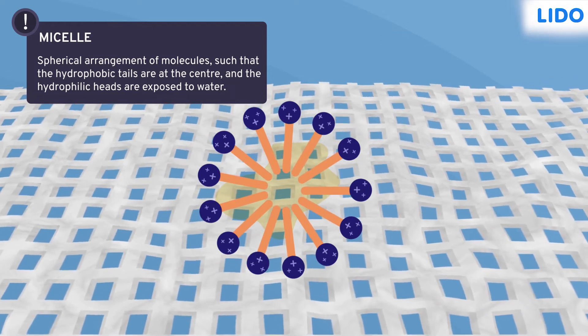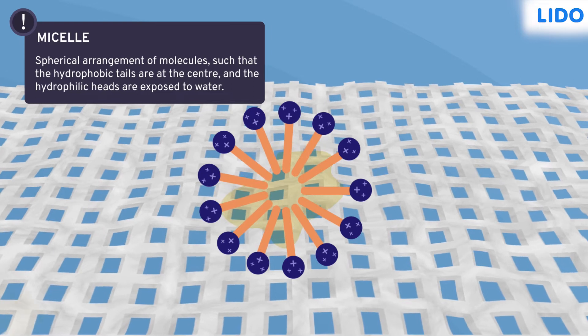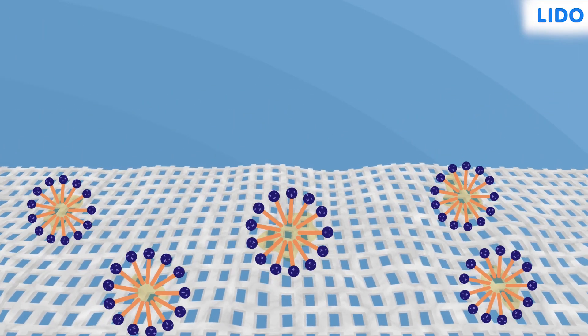This vertical arrangement is called a micelle. Many such micelles are formed in and around the stains.